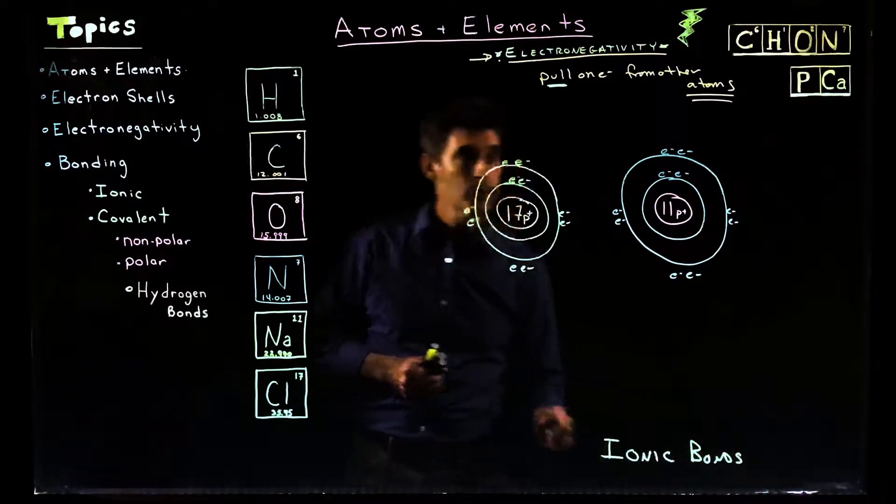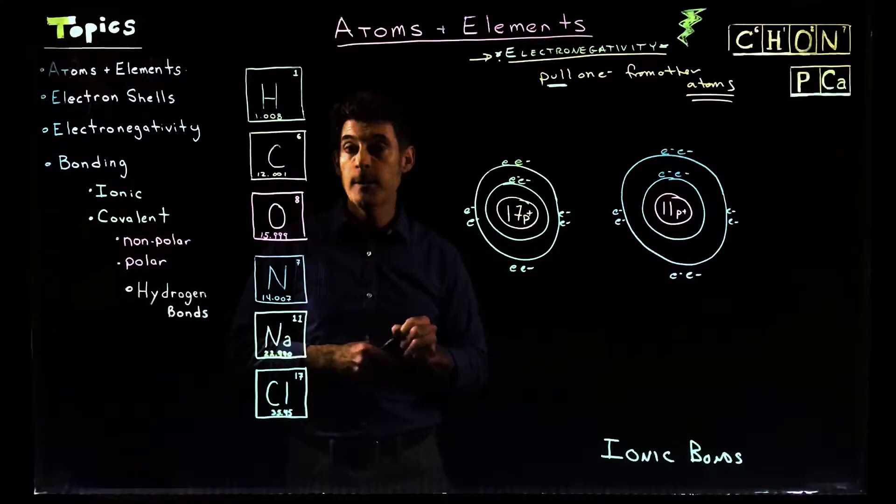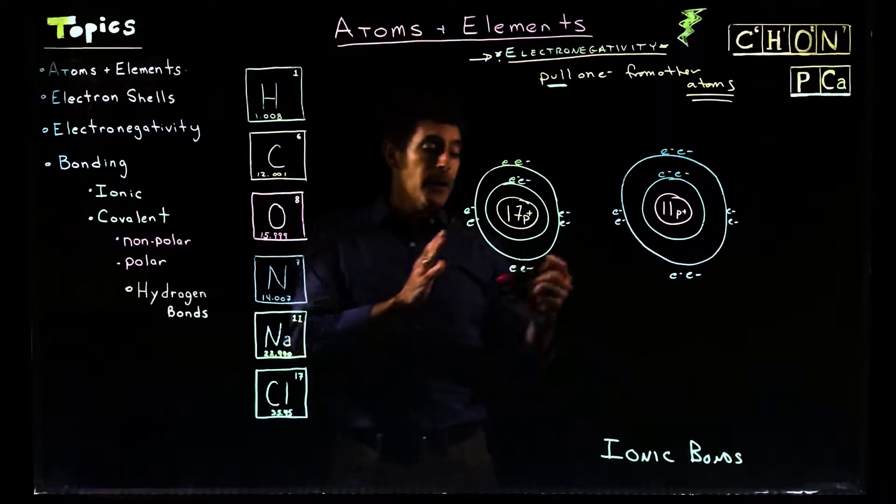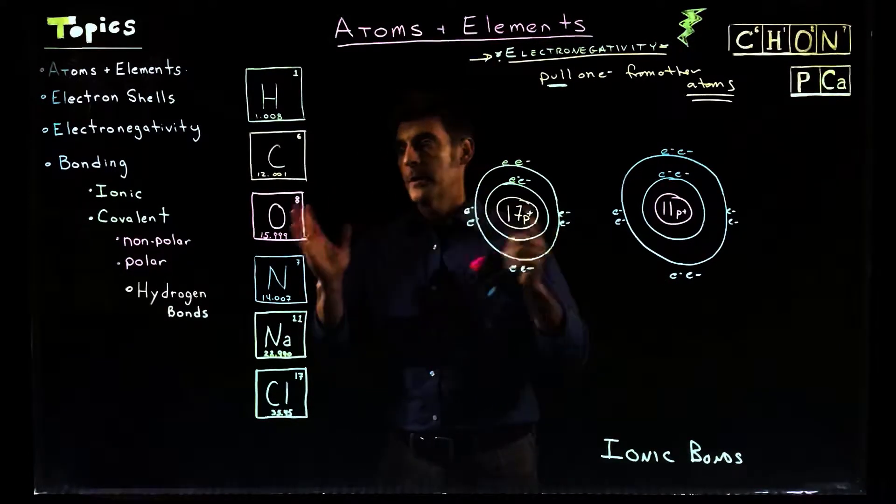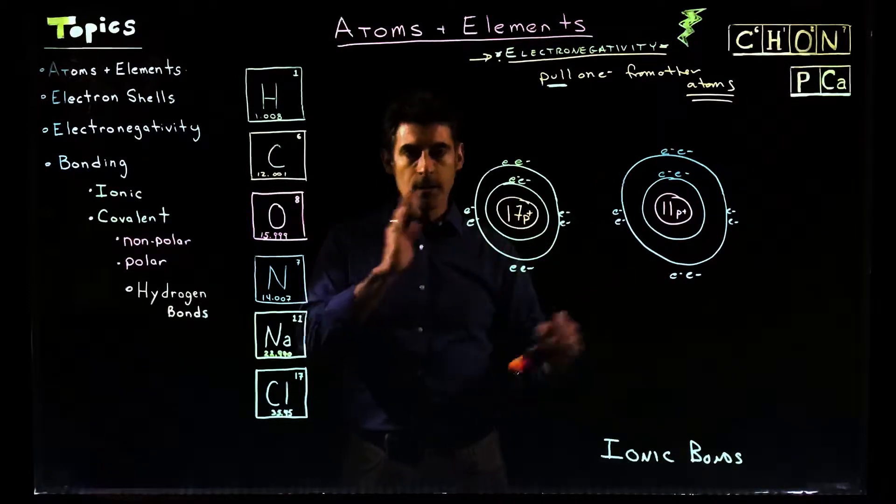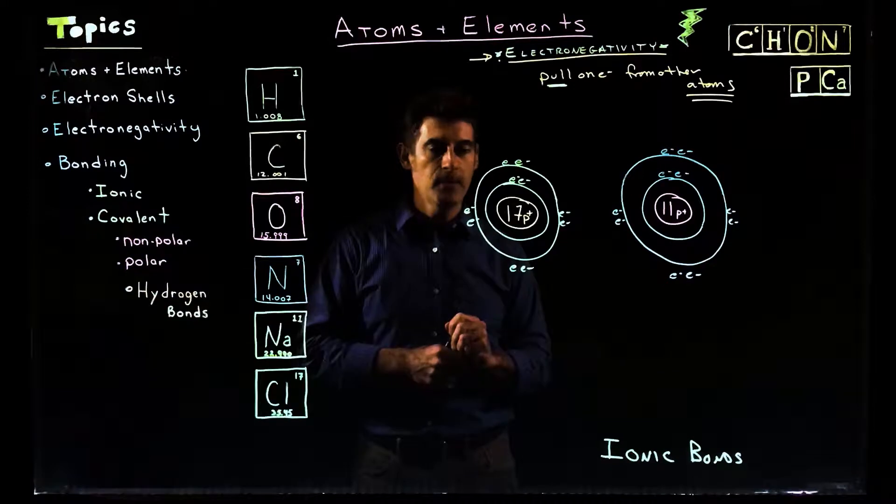So in the last lecture, we looked at the most straightforward type of covalent bond, which would be the non-polar covalent bond, where they equally share. Now we're going to look at ionic bonds. I'm going to kind of come back to the polar, because you'll see how they kind of fit together, how there's a relationship. And then finally, the hydrogen bonds.